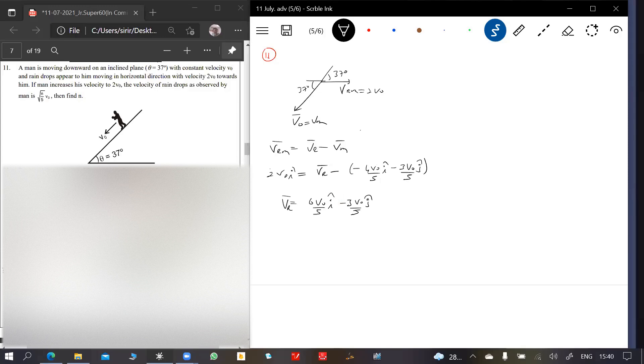If the man's velocity equals 2 v naught, what will happen to the actual velocity? Now the velocity of man is 2 v naught. V r m as usual is 2 v naught.